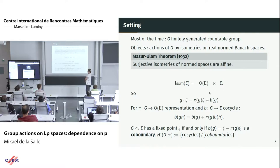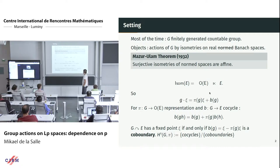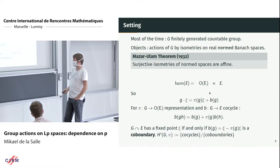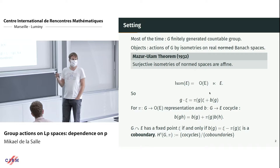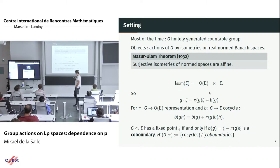As discussed earlier in the conference, having a global fixed point for the action is the same as saying the cocycle can be written as b(g) = ξ − π(g)ξ. Such a cocycle is called a coboundary. Coboundaries form a subspace of cocycles, and the quotient space — the space of cocycles modulo coboundaries — is the first cohomology group. This cohomological vocabulary encodes the questions I'm studying.